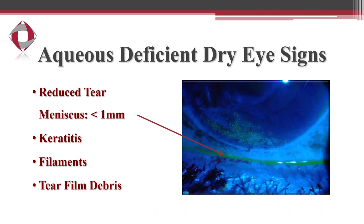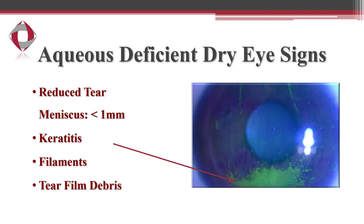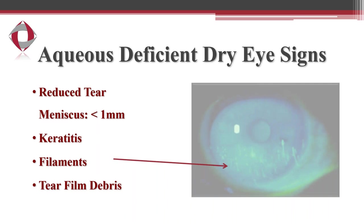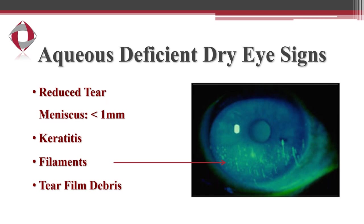This photo shows insufficient tear film — the tear lake accumulating at the surface of the lower lid margin is really thin and reduced. Anything less than a millimeter is considered abnormal. We'll also see inflammation of the cornea, which we call keratitis. In more severe cases we'll see what's called corneal filaments — basically a gelatinous strand of degenerated cells attached to the cornea on one end. When the patient blinks, the other end moves freely and causes a pretty severe foreign body sensation, though these can typically be removed in-office at the slit lamp.